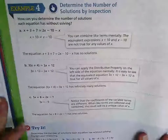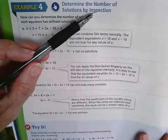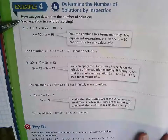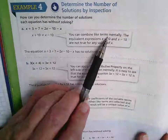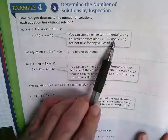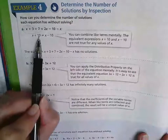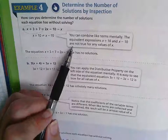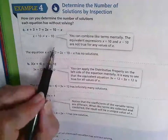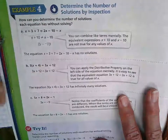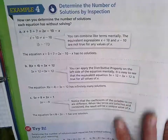Over on page 410 at the top: determine the number of solutions by inspection — that means just by looking at it — without solving. You can combine like terms mentally. Here we have X plus 3 plus 7 equals 2X minus 10 minus X. On the left-hand side you get X plus 10, and on the right-hand side you get X minus 10. Subtracting the X's gives 10 equals negative 10, which is false, so this has no solutions.